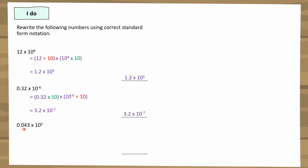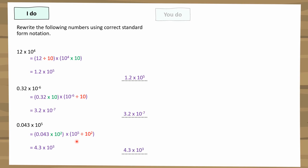Finally, 0.043 × 10^5. Multiplying 0.043 by 10 once still won't give a number between 1 and 10, so I need to multiply by 10 twice, i.e., by 10^2. To compensate, I divide the power part by 10^2. So 0.043 × 100 = 4.3, which is between 1 and 10. Then using laws of indices, 10^5 ÷ 10^2 = 10^3. The answer in correct standard form is 4.3 × 10^3.